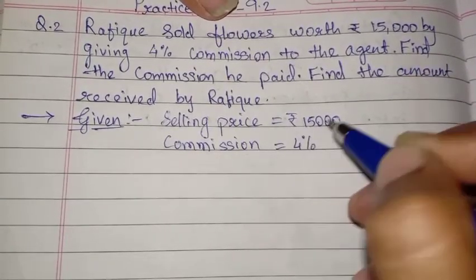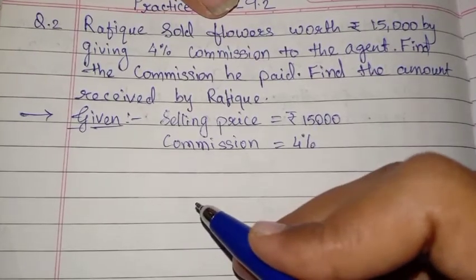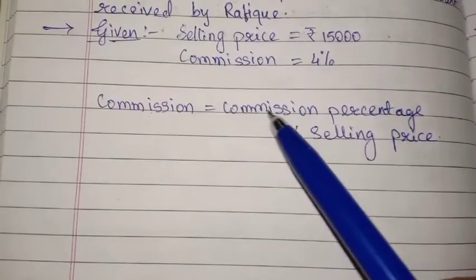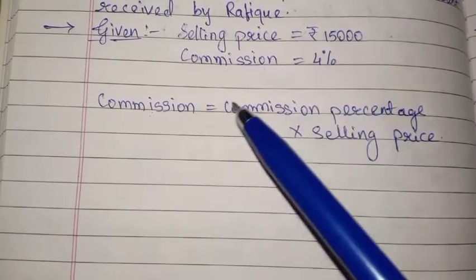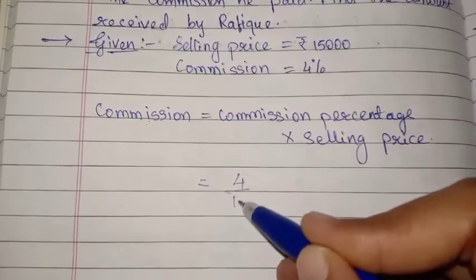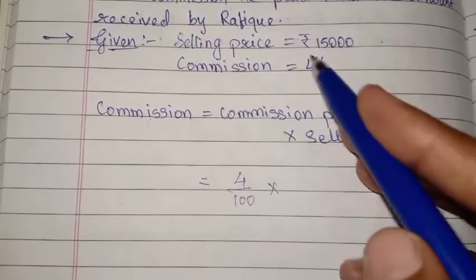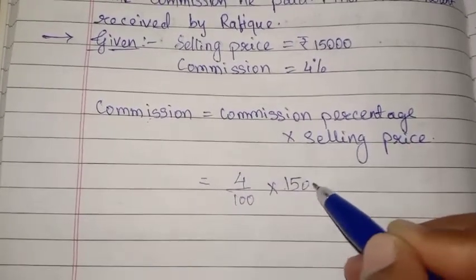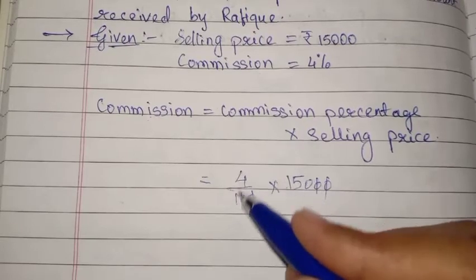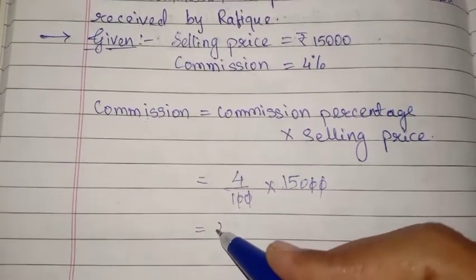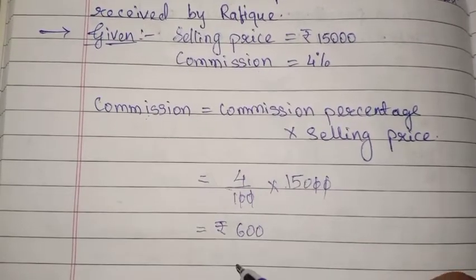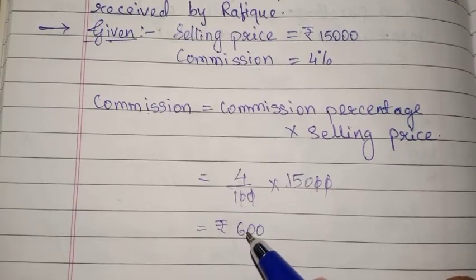Commission = commission percentage × selling price. Substituting values: commission percentage is 4%, written as 4 upon 100, multiplied by selling price of 15,000. The two zeros cancel with the two zeros, giving 15 × 4 = 60, so commission = rupees 600.